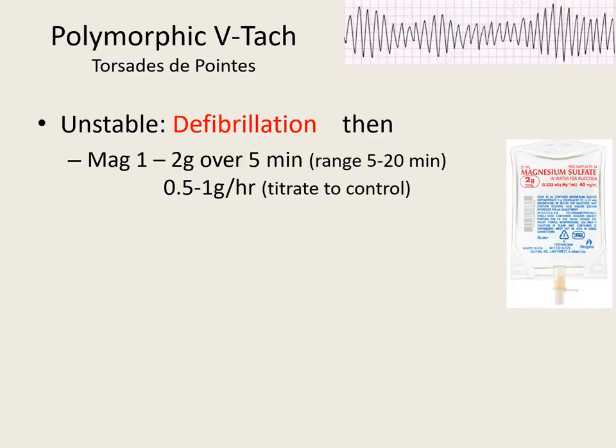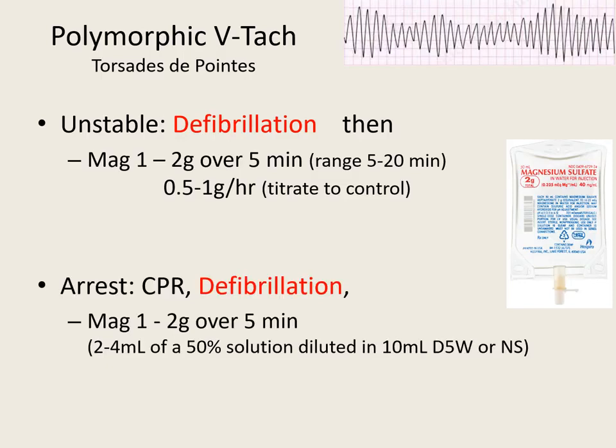If they are dead and in torsades, we're doing CPR and defibrillating at 100, 200, 300, 360, and doing magnesium 1 to 2 grams over 5 minutes. Some places say you can just do a push or bolus of magnesium. That's our three different situations with torsades — stable, unstable, and dead. Think about 1 to 2 grams over 5 minutes; if you know that, you can make it work for all three scenarios.